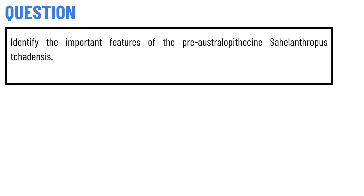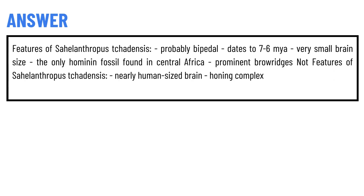Today's question is: identify the important features of the pre-Australopithecine Sahelanthropus tchadensis. Here is the correct answer to the question.